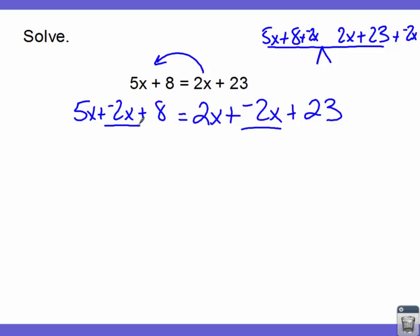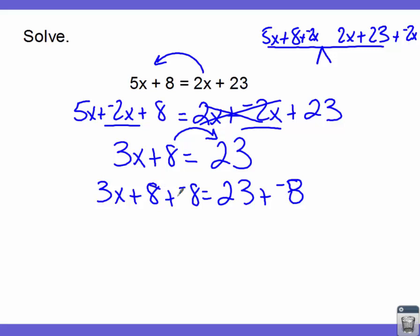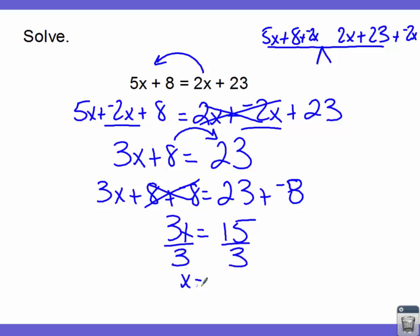Now we simplify. On the left-hand side, 5x plus negative 2x gives me 3x plus 8 equals. On the right side, my 2x's cancel each other out, making 0, and I'm left with 23. Now I need to collect all my numbers on the other side. So I add the opposite — 3x plus 8 plus negative 8 to make it go away, and add the same to the other side. My 8s go away, and I'm left with 3x equals 23 plus negative 8. Our signs are different, so we subtract and get 15. Now I have a multiply by 3, so I divide by 3 on both sides, and we end up with x equals 5.